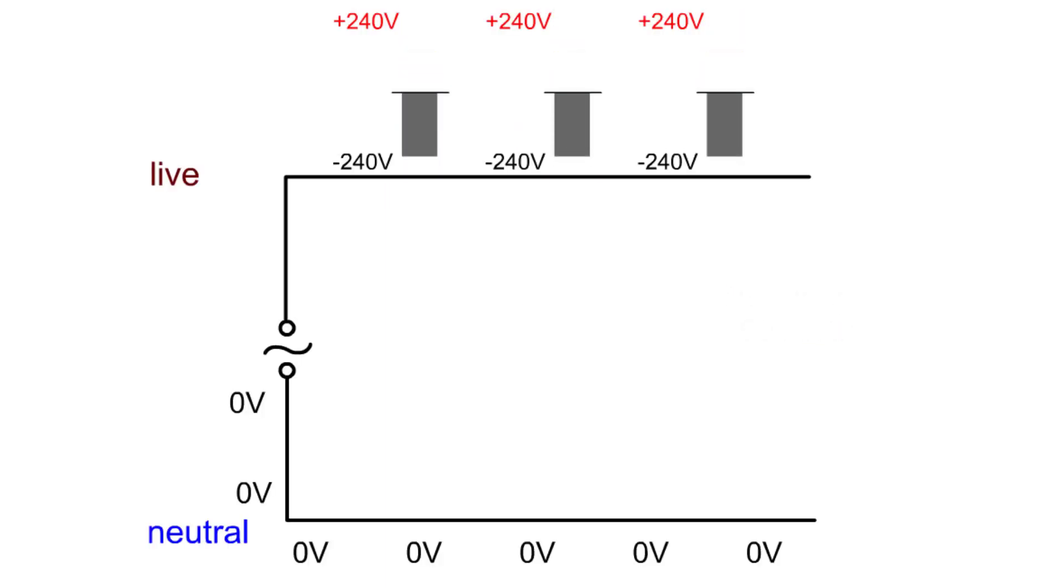The mains has an alternating voltage. The voltage is still there even if there's no circuit and so no current.